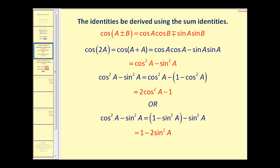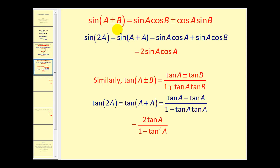For the sine of two A, we'll again use a sum identity. Using A plus A instead of A plus B, we obtain two times sine A cosine A. Similarly, for tangent, using the sum identity with angle A plus angle A, we obtain two tangent A over one minus tangent squared A. You may want to pause the video and look at these derivations more closely.